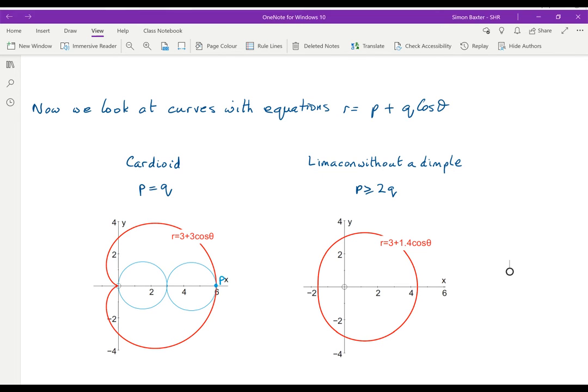Now we look at something a little bit more difficult. Curves with equations like p plus q cos theta. The first one is when they're equal. When p equals q, in this case I've taken 3 plus 3 cos theta. And this gives us a cardioid.